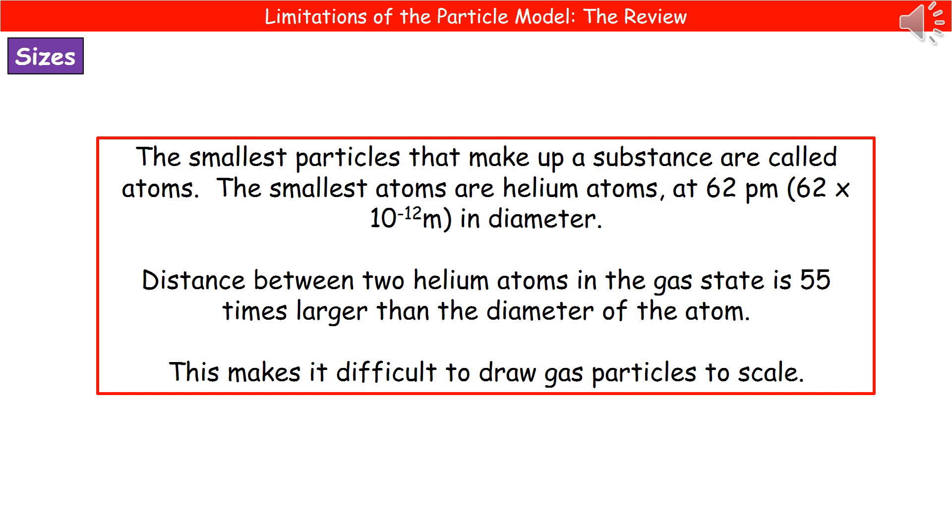The first thing we're going to consider is the size of these particles. The smallest particles that make up a substance are atoms, and the smallest atoms are helium atoms. Helium atoms come in at this absolutely tiny diameter of 62 times 10 to the minus 12 meters. These things are absolutely tiny.